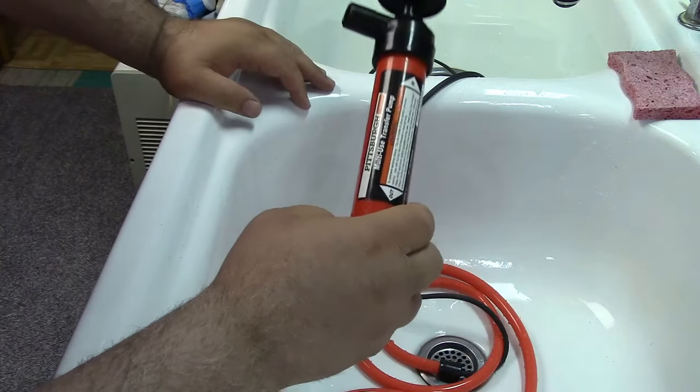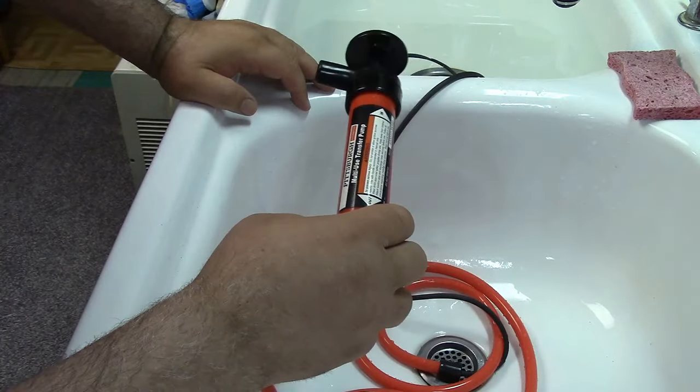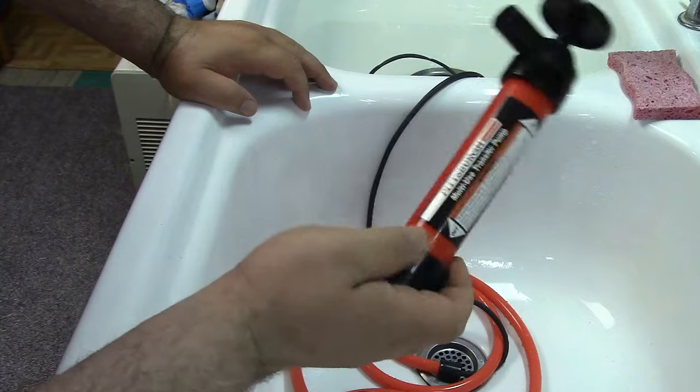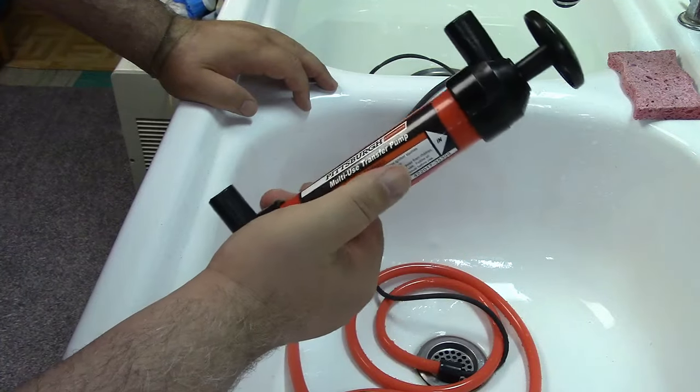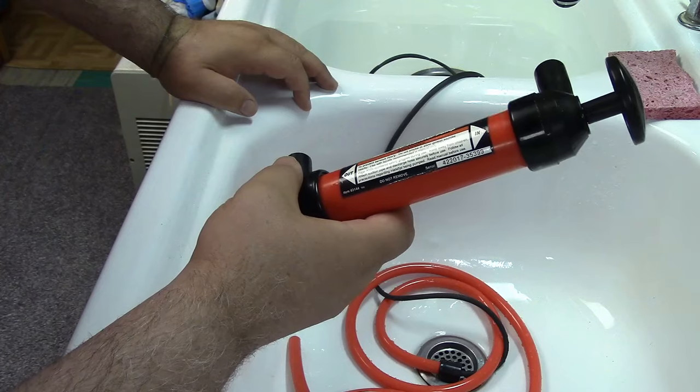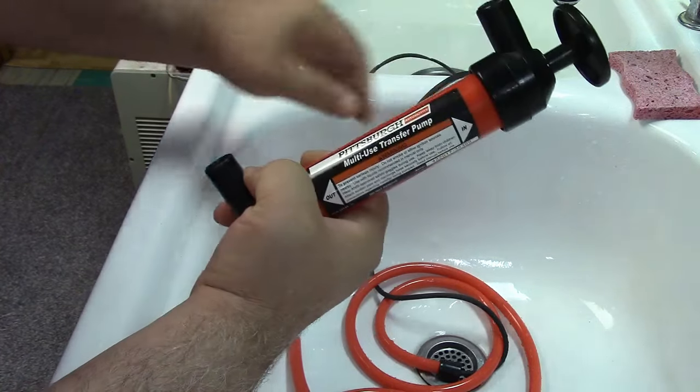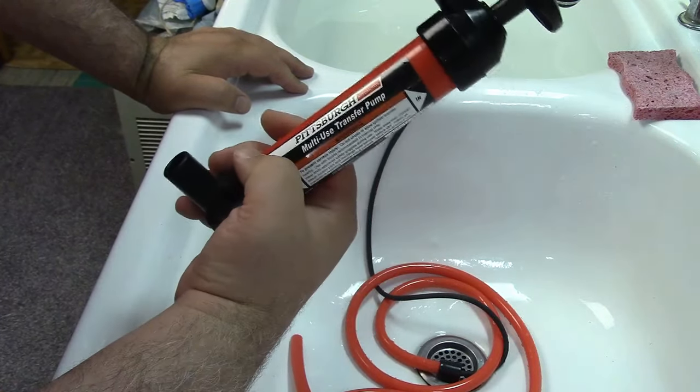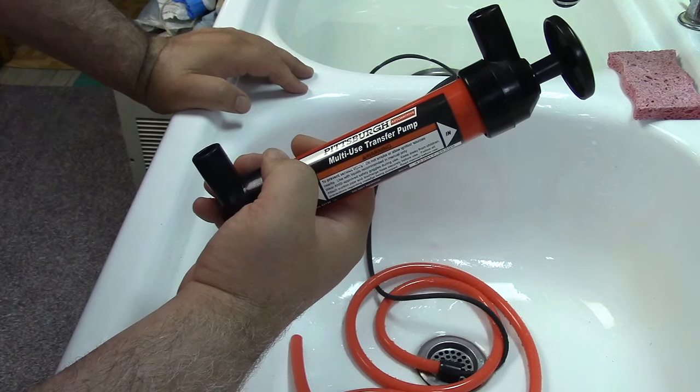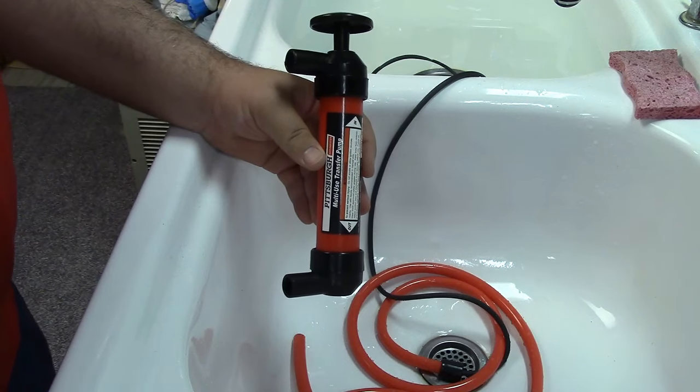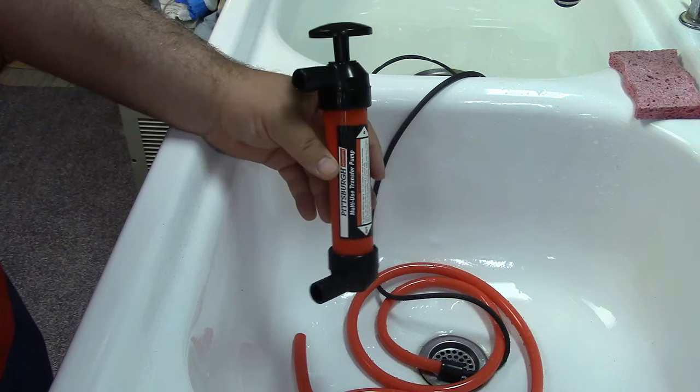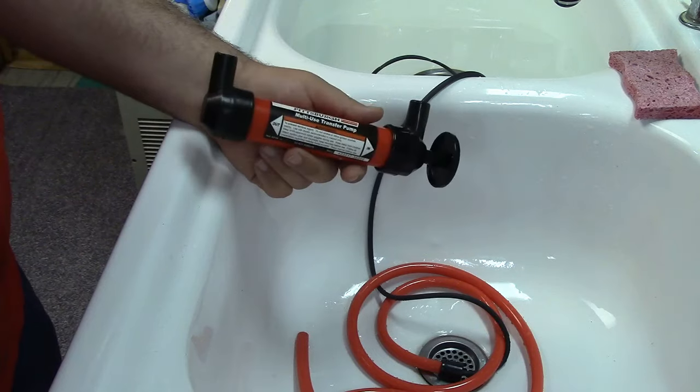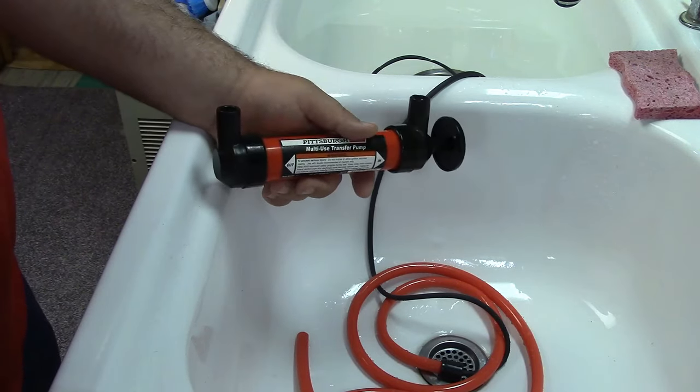So like I said, if you're gonna pump gas with it, you're probably going to want to get a second one for use with other fluids. I do have two of these. You'll see it is marked 'out' and 'in' there, and I'm gonna put a label on this, you know, 'gasoline only,' and then the other one will be for whatever it needs to be but not gas. That's really it—the Pittsburgh multi-use transfer pump. Once again, this was item 63144, available at Harbor Freight. Really nice to have. You never know when you'll need it, and when you do, you'll be glad you have it. Of course, you can always pick it up then too.